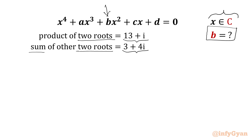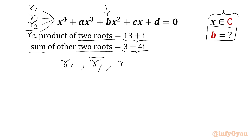Let's get started by writing the four roots of the quartic equation. We know that roots follow the conjugation property. If the first root is r1, then its complex conjugate r1_bar is the second root. If the third root is r2, then the fourth root must be r2_bar. So the four roots are r1, r1_bar, r2, r2_bar.